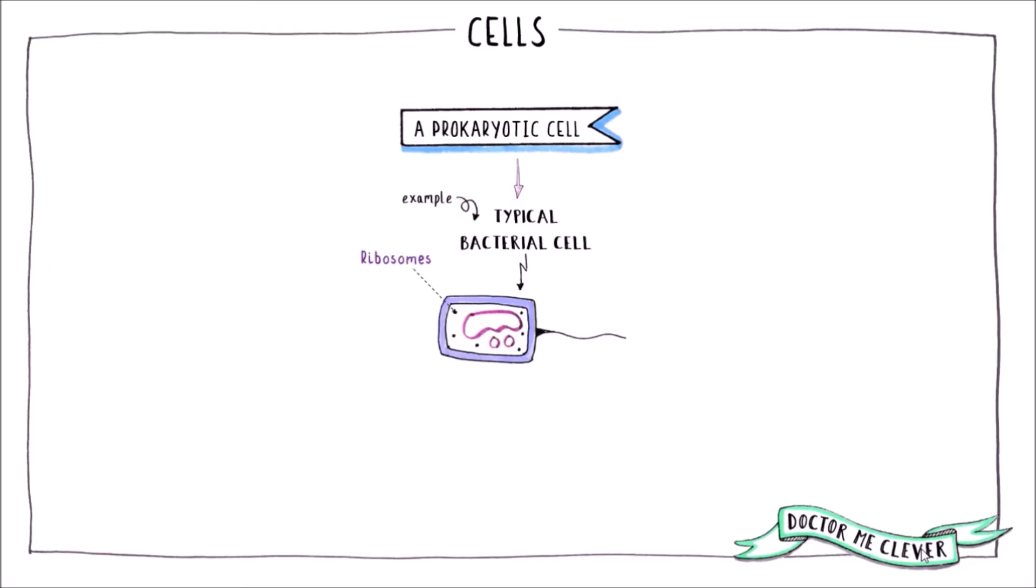So like animal and plant cells, bacterial cells contain ribosomes where protein synthesis occurs, a cytoplasm where most of the cell's reactions take place, and a cell membrane that controls what goes in and out of the cell.